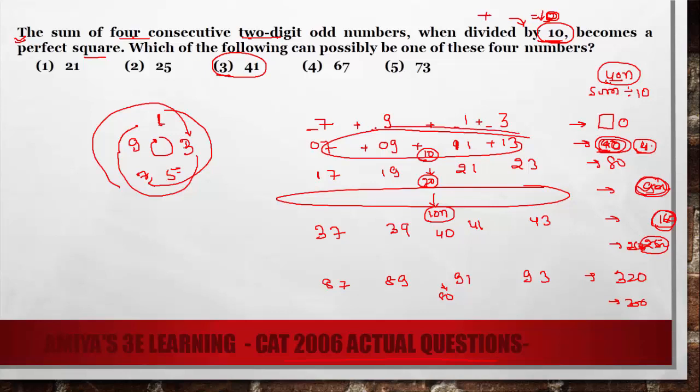So we have 2 such combinations in which we have 4 consecutive 2-digit odd numbers. Summation divisible by 10 and when divided by 10, we get a perfect square. So our answer with all concepts is this one. Or the alternate approach is we check with the options and solve the question.